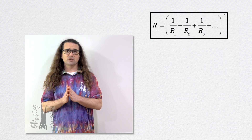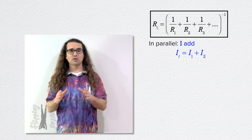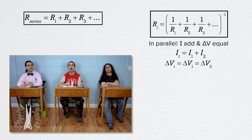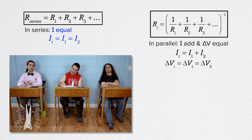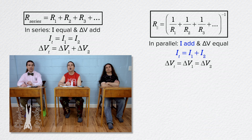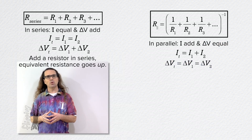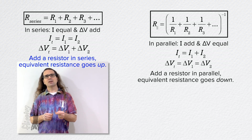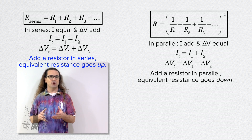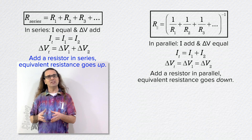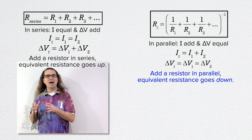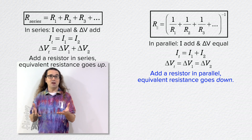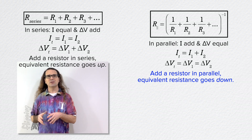Please remember that in parallel circuit elements, currents add and electric potential differences are the same — the reverse of series elements. Adding resistors in series increases the equivalent resistance, because you are adding resistance to the path charges must travel. Adding resistors in parallel decreases the equivalent resistance, because you are adding an additional pathway for charge to travel. So the equivalent resistance of a series circuit is always greater than the largest resistance in the circuit, and the equivalent resistance of a parallel circuit is always less than the smallest resistance in the circuit.